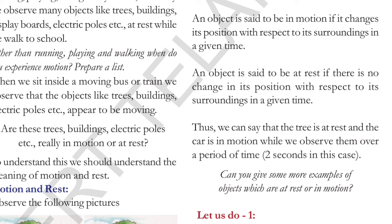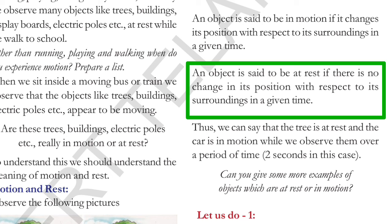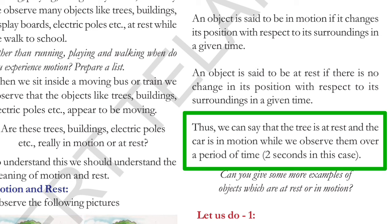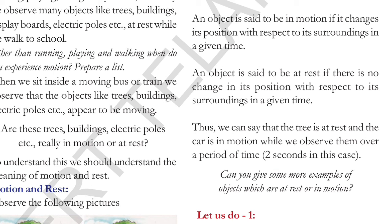Remember this statement, students: an object is said to be in motion if it changes its position with respect to its surroundings in a given time. An object is said to be at rest if there is no change in its position with respect to its surroundings in a given time. Thus, we can say that the tree is at rest and the car is in motion while we observe them over a period of time. In this case, in 2 seconds the car changed its position — so the car is in motion. The surroundings are at rest as they are not changing their position.